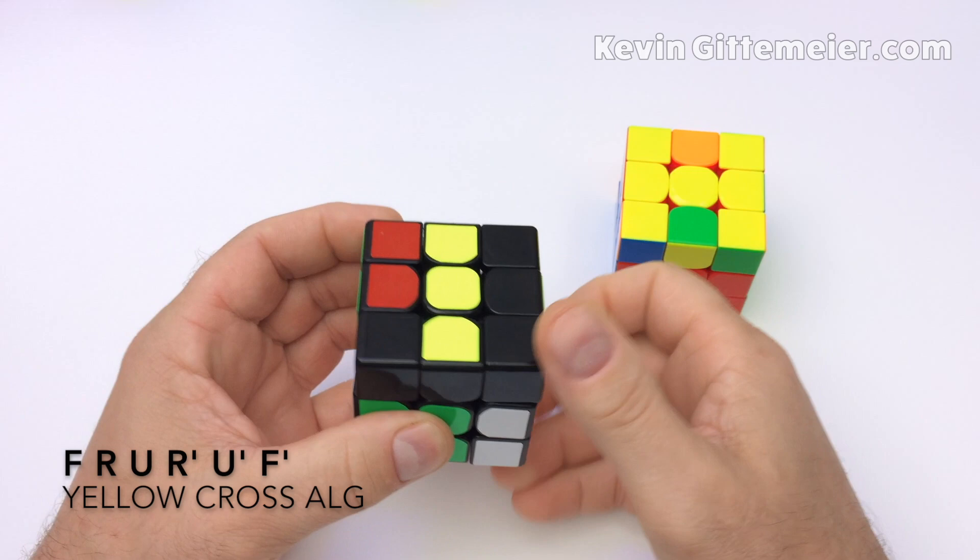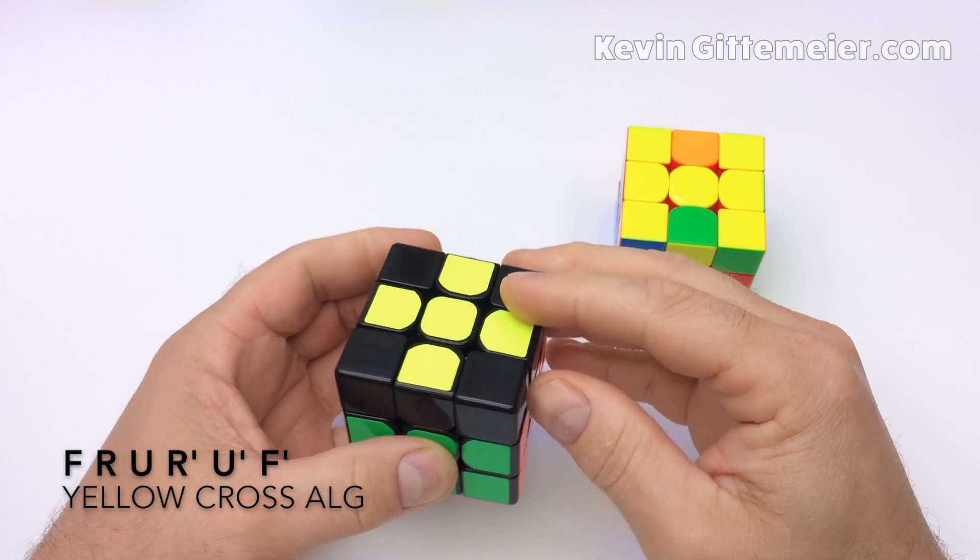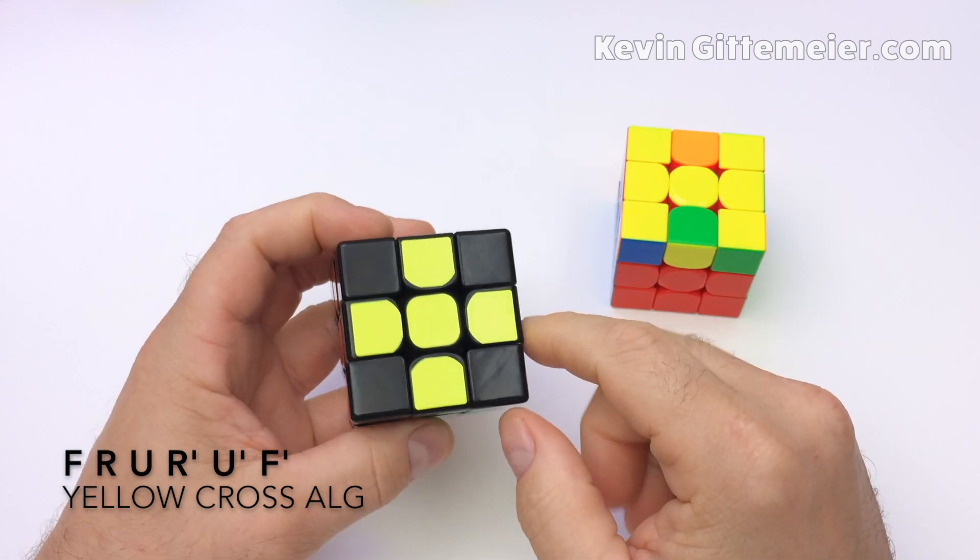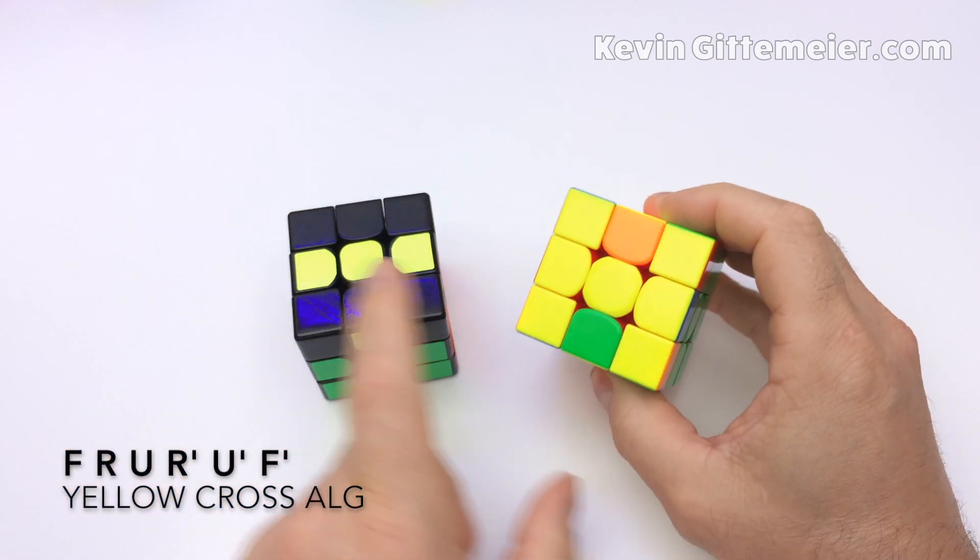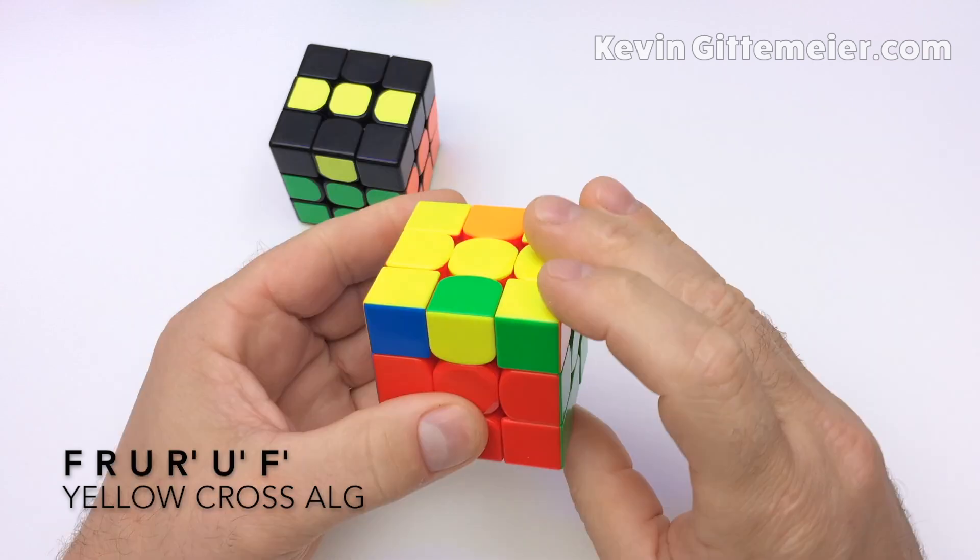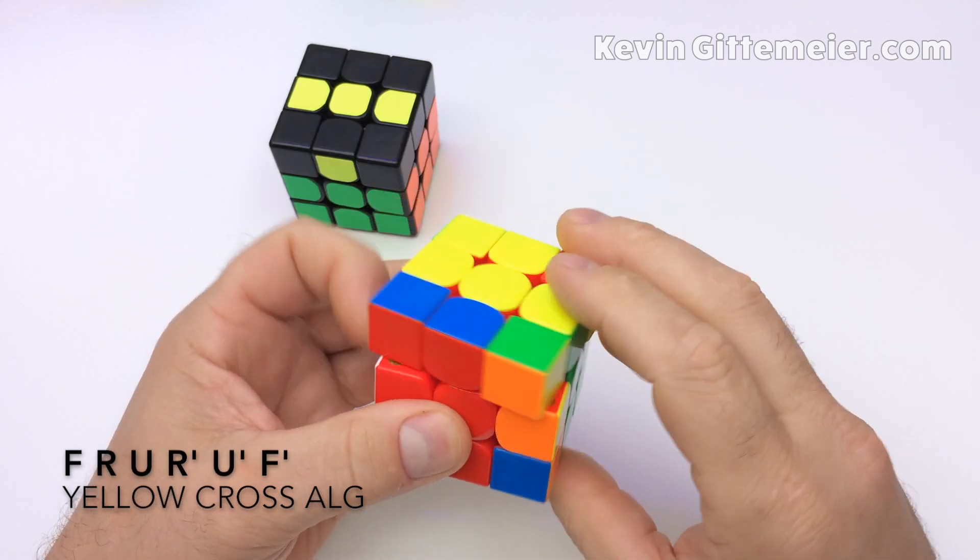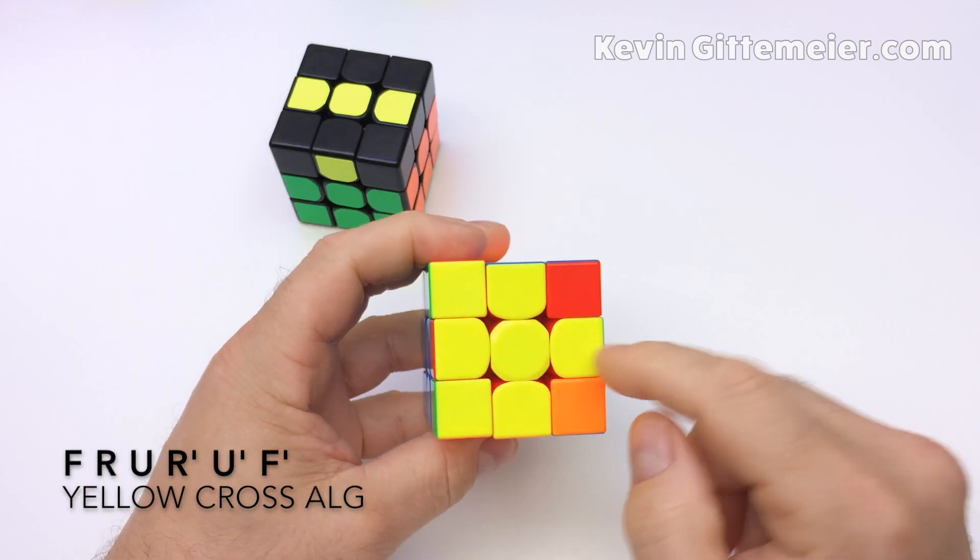Front, right, up, right prime, up prime, front prime. Now we have a yellow cross. Disregard any corner pieces. We're only looking at the edge pieces. So this is a line just as this is. There we have the cross.